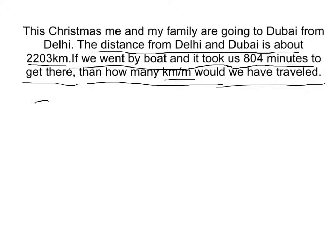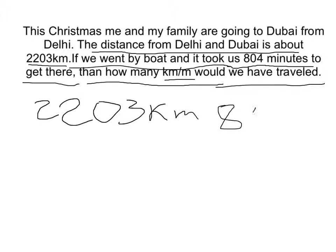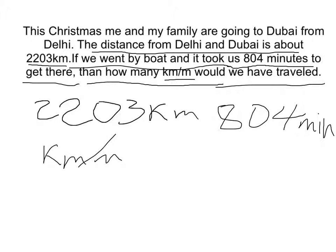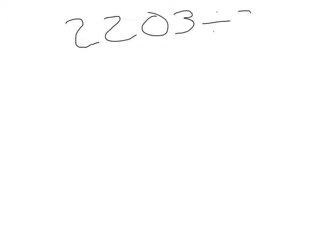The distance is 2,203 kilometers. How many kilometers per minute did it take us to get there? Now we know that it's 2,203 divided by 804 equals something. So let's answer that using the partial quotients algorithm.